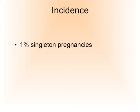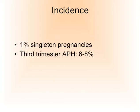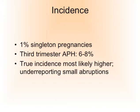About the incidence: roughly 1% in singleton pregnancies. Partial abruption takes place usually around 6 to 8% in the third trimester and is then associated with antepartum hemorrhage. The true incidence is probably much higher, as many cases may not present with small bleeding antepartum, so there is probably underreporting.